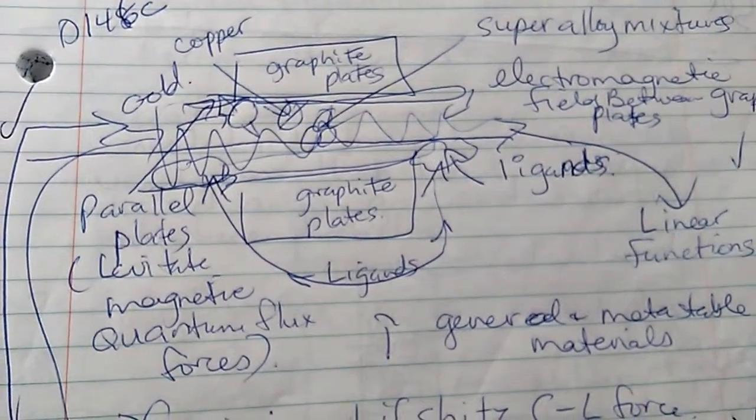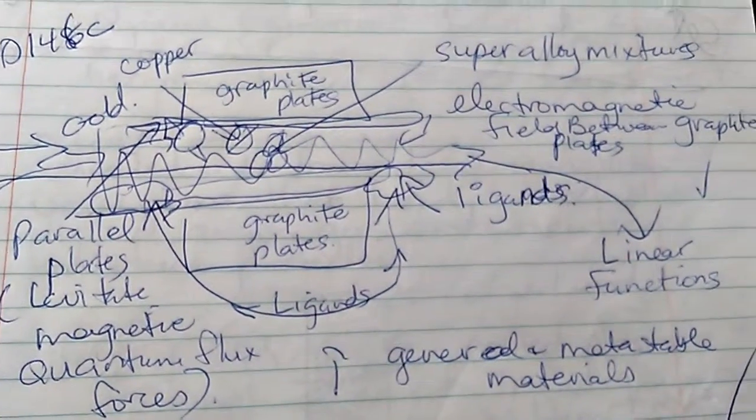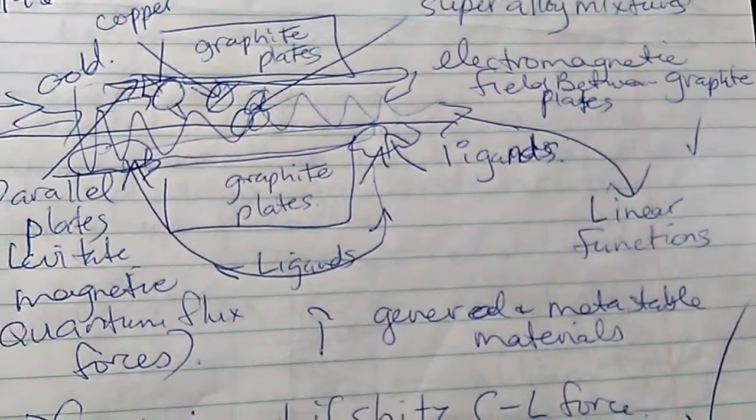And then you have these particles colliding with each other. We have gold, copper, super alloy mixtures, electromagnetic field between the graphite plates.